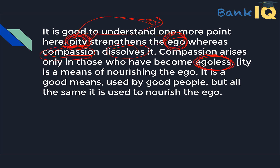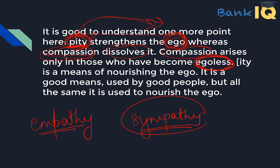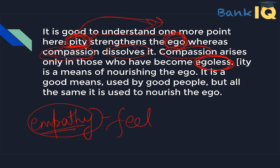Compassion arises only in those who have become egoless. Those who have no ego, they have the ability to connect with another person. Compassion means feeling empathy for what another person is feeling. Remember, there is a very important difference between empathy and sympathy. Sympathy is when you show almost a kind of pity towards someone — you are sympathetic towards them. Whereas empathy means you feel for another person — you literally picture yourself in their place. So compassion, when you truly feel what they feel, dissolves the ego.